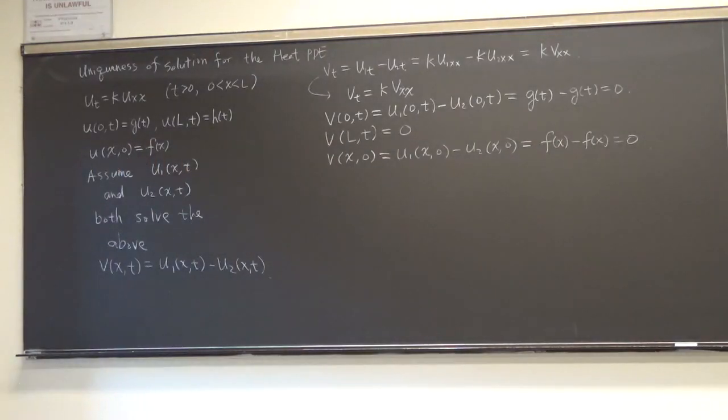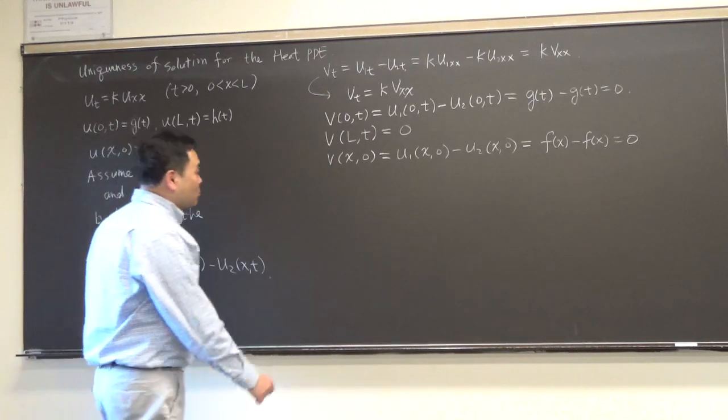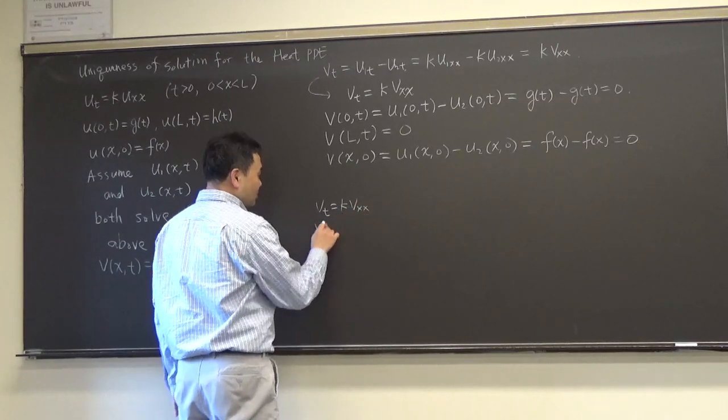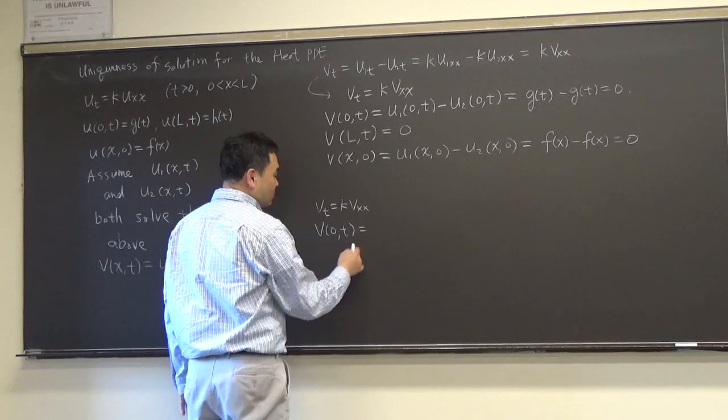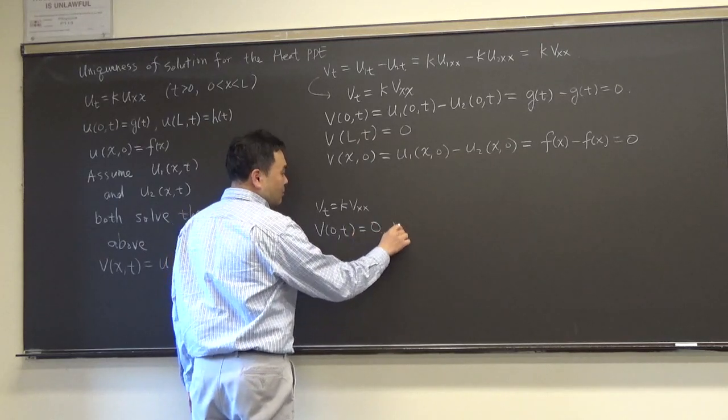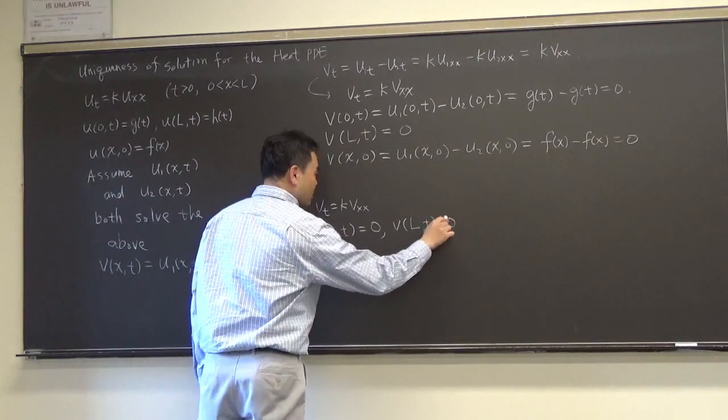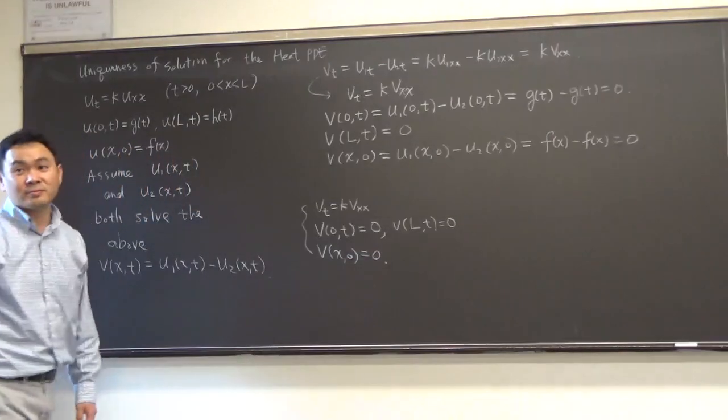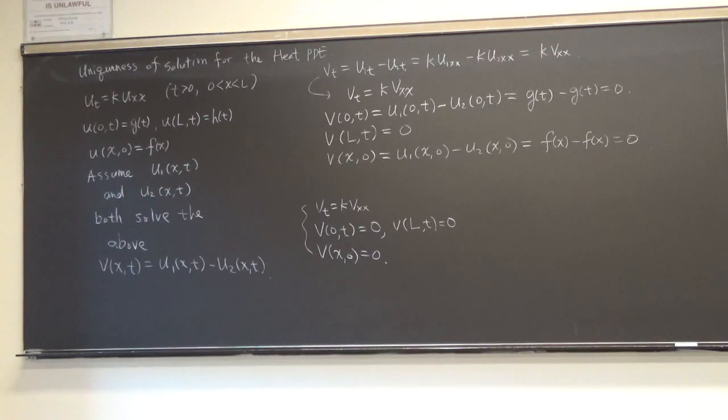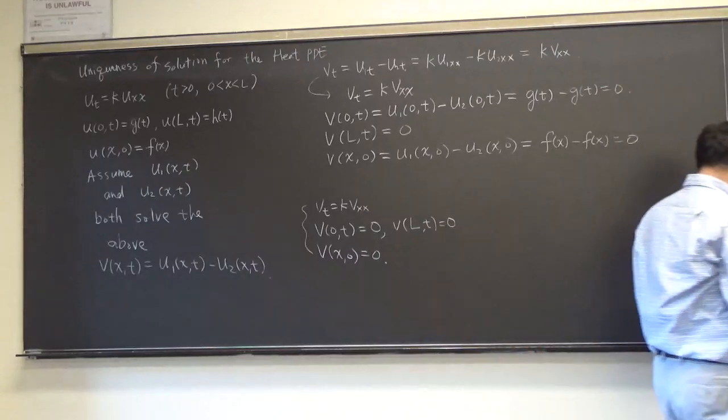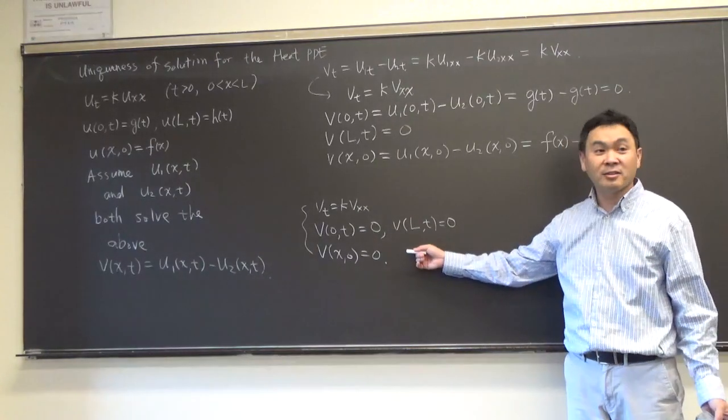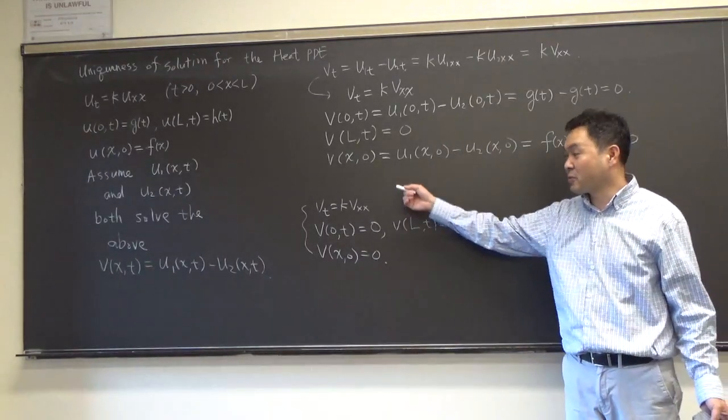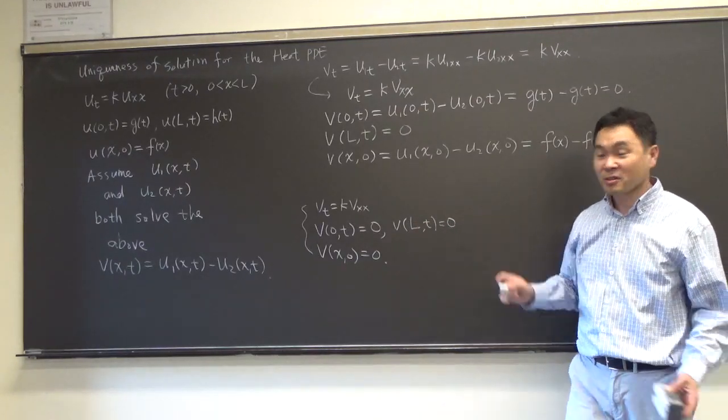So these are the equations or conditions that v must satisfy. We know that v_t should equal to k times v_xx. v(0,t) should equal to zero. v(L,t) should equal to zero. v(x,0) should equal to zero. All of these. Now, then it remains us to prove that anything that satisfies this must be exactly zero. The only function that would satisfy all three conditions is just zero. So how do we do that?